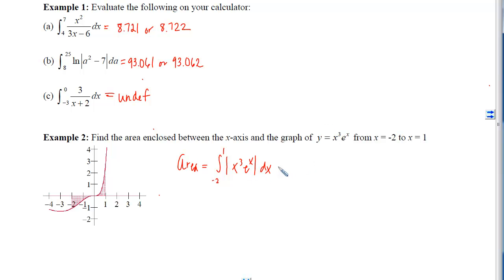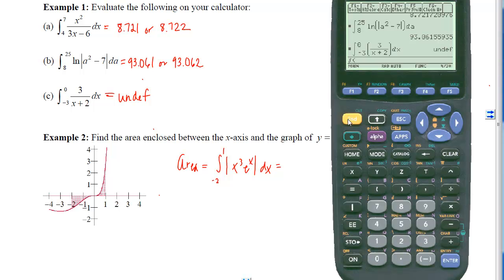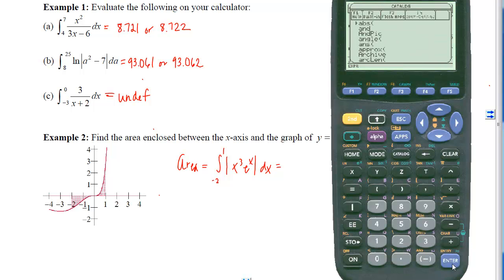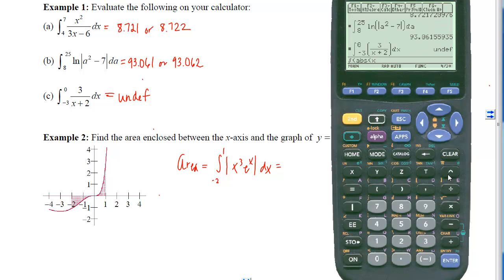So if I put this into the calculator, we'll do second integral of the absolute value of x cubed times e to the x, close the absolute value, tell the calculator we want to integrate with respect to x from negative 2 to 1, close it off, diamond, enter. So our area is 1.420 or 1.421.